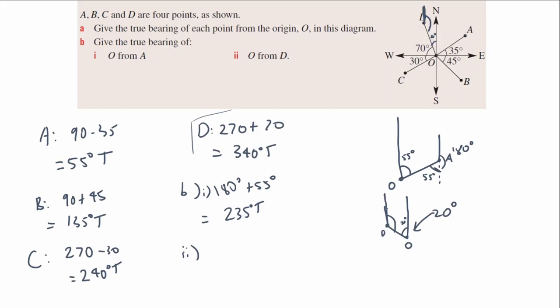Using co-interior angles: something plus 20 equals 180, so I'll call the bearing X. X plus 20 equals 180, therefore X equals 160. So the bearing of O from D is 160 degrees true.